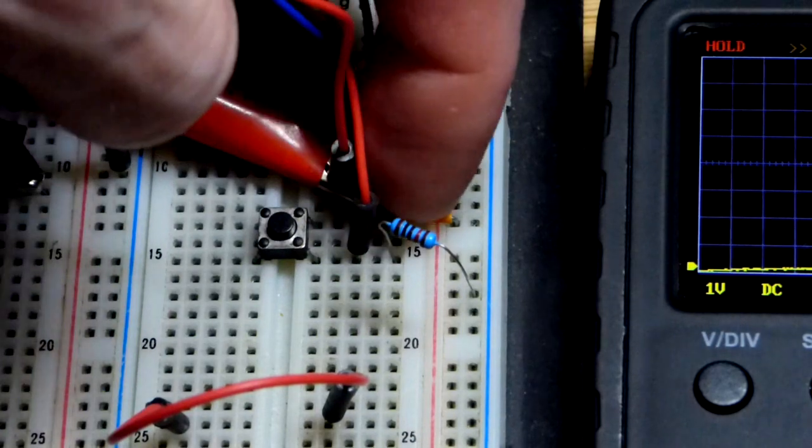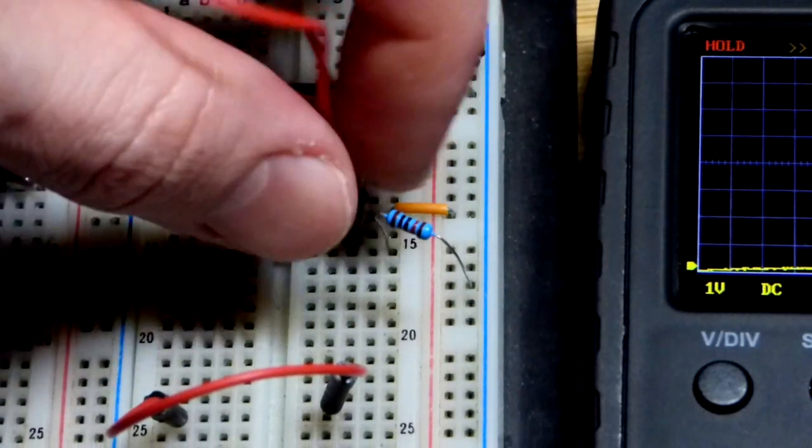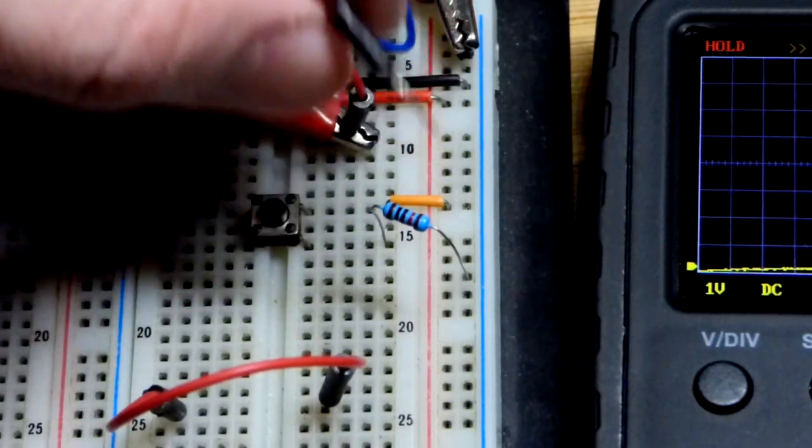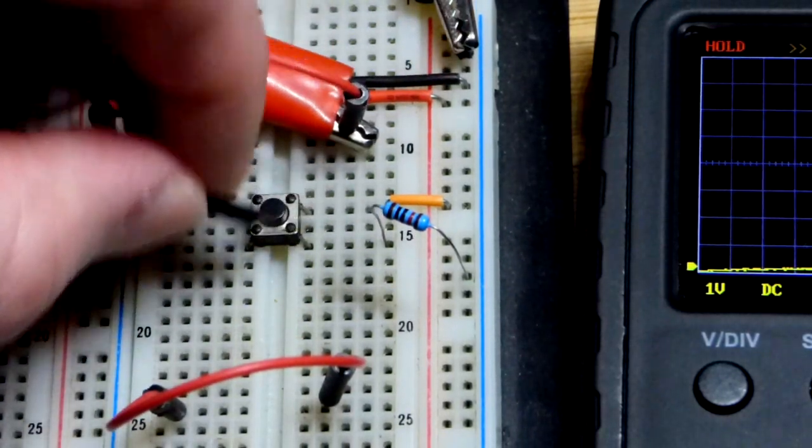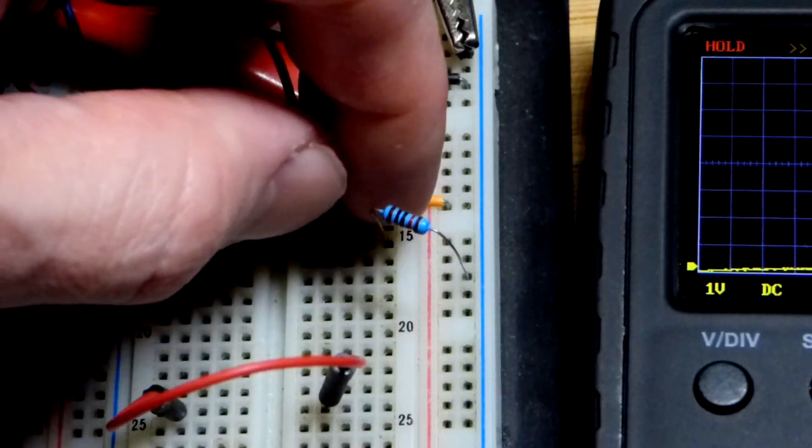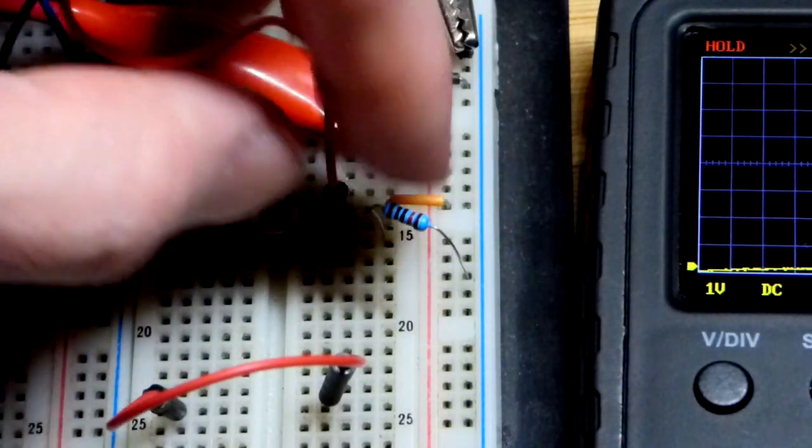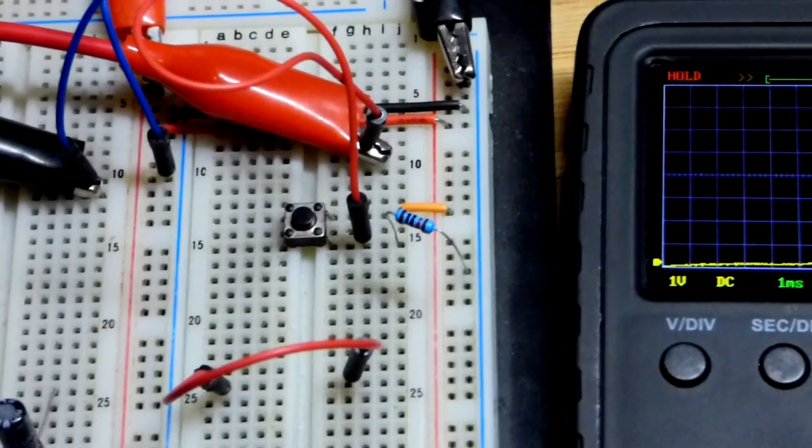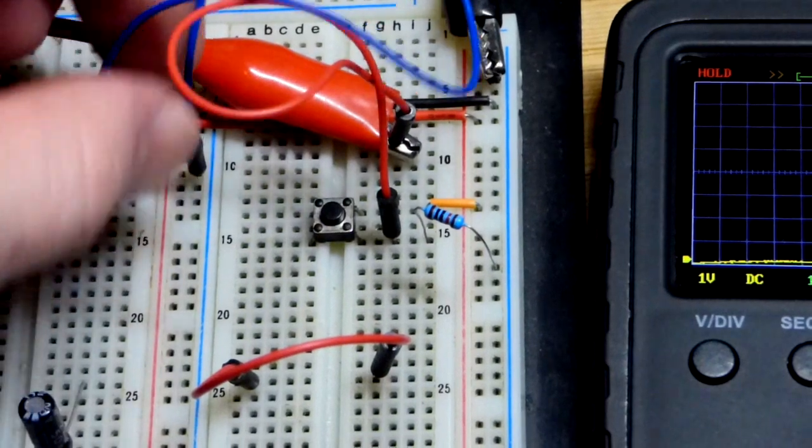And here we are. So you can see we got the positive jumper there, and here is the oscilloscope. I didn't mean to unplug it right there. And a little jumper that comes down here. So we got the push-button switch—that's where we're going to take our measurement—and we have a 10,000 ohm resistor there going to the negative supply.